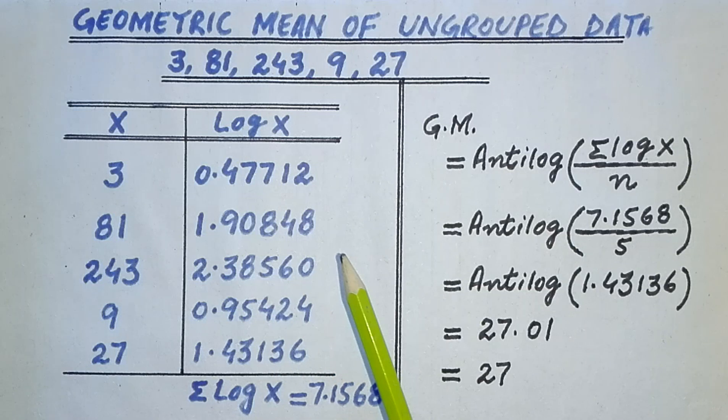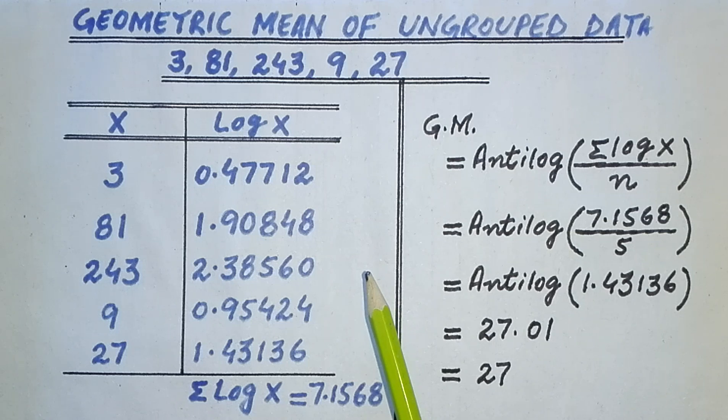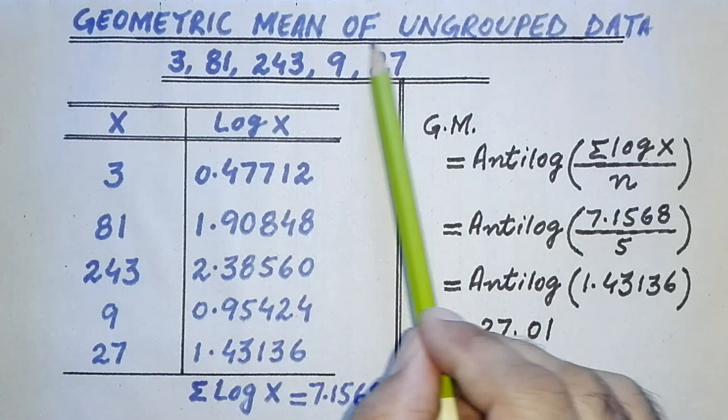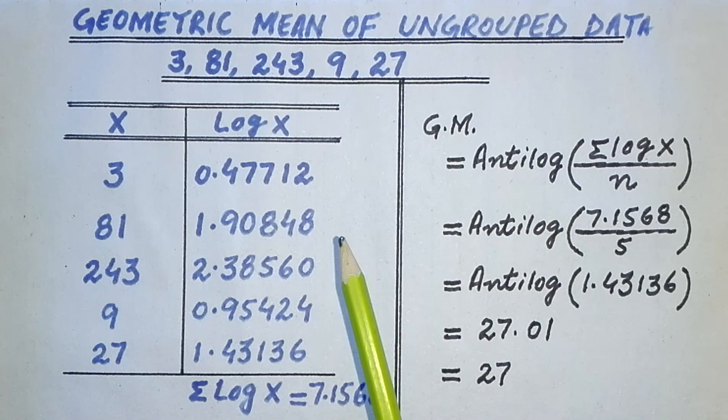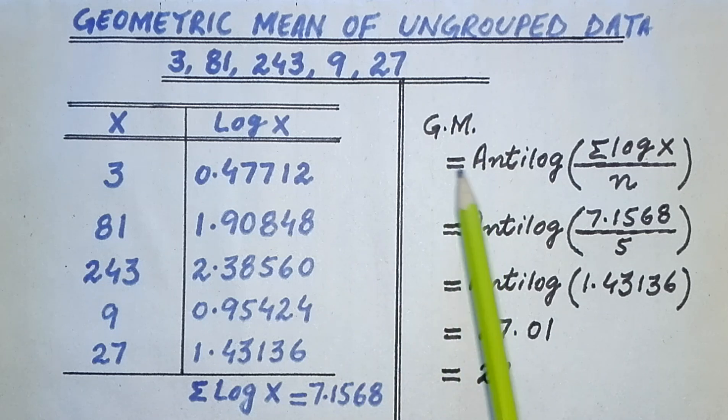In this video we will discuss how to find the geometric mean of ungrouped data. This is an ungrouped data and the formula to find its geometric mean is GM equals antilog of sigma log x over n.